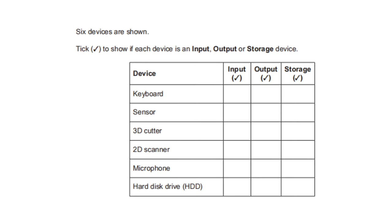Six devices — tick whether each is an input, output, or storage device. Keyboard — input device. Sensor — input device. 3D cutter — output device. 2D scanner — input device. Microphone — input device. Hard disk — storage device.